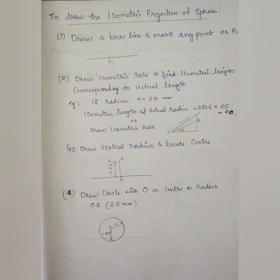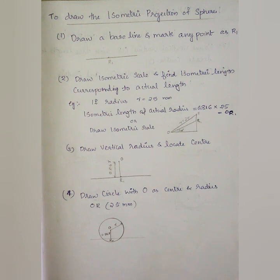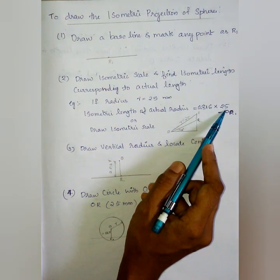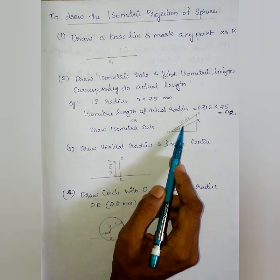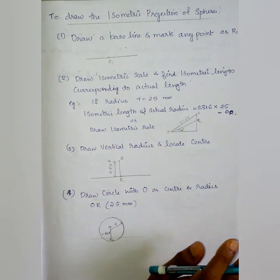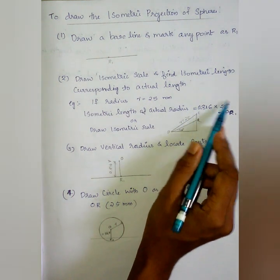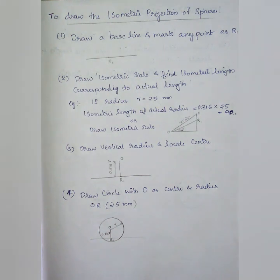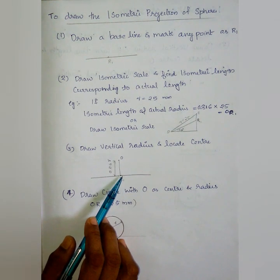This is the center of the sphere. Isometric projection is used as a scale. The isometric length is 25mm. The isometric length is 0.816 into 25, using a 30-degree isometric scale. The isometric length is calculated as 0.816 into 25mm. We have a point at R1, then 0.816 R.